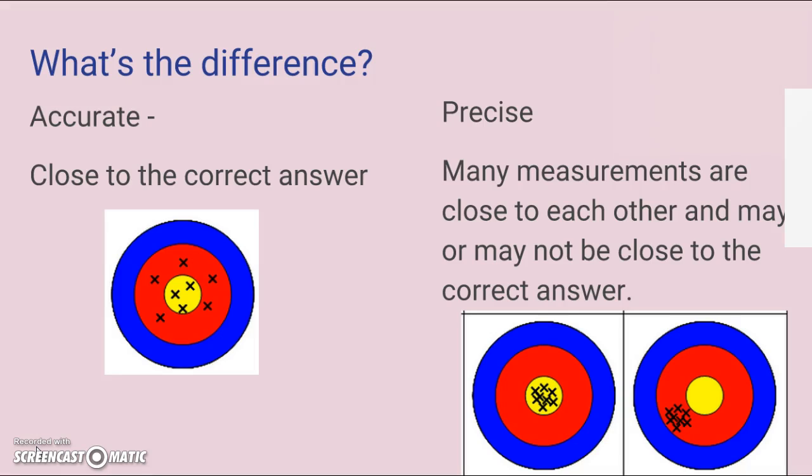Now that you've measured your hand and wrote down the measurements from the previous slide, this slide you do need to copy down all of it. What's the difference? We have two vocab words. The first one is accurate - accurate is how close to the correct answer you are. The other word is precise - many measurements are close to each other and may or may not be close to the correct answer. If you're shooting darts or arrows, where do you want to hit? The center, the bullseye, in this case the yellow.